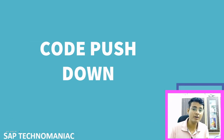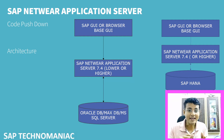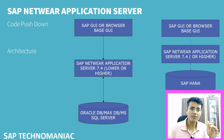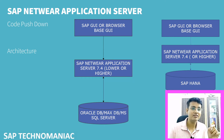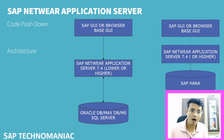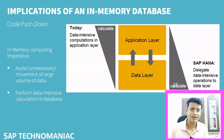Before going to code push down, if your application server level is below 7.4, then you can't use ABAP on HANA. Your application server should be 7.4 and above — only then can you use ABAP on HANA.